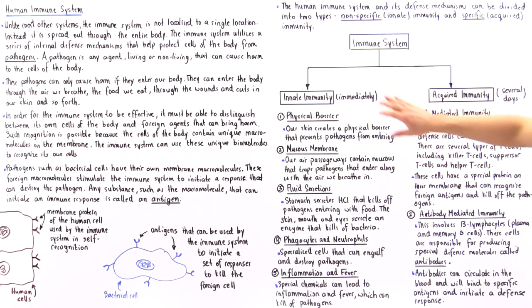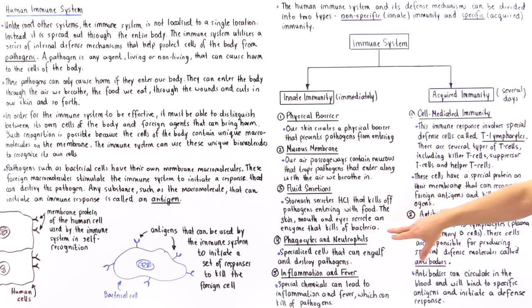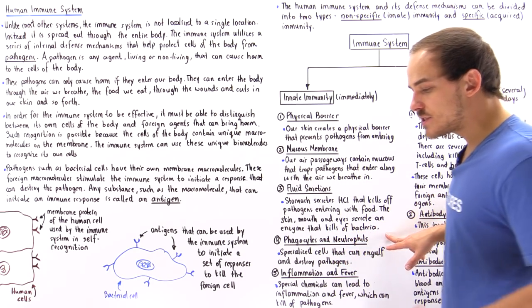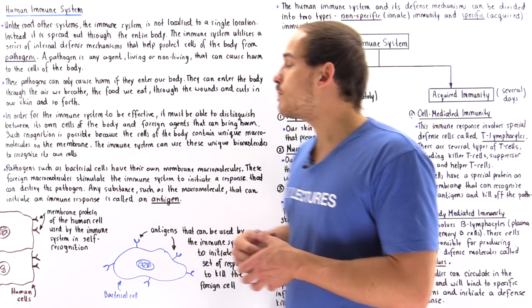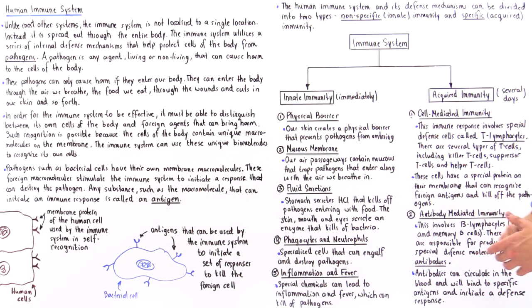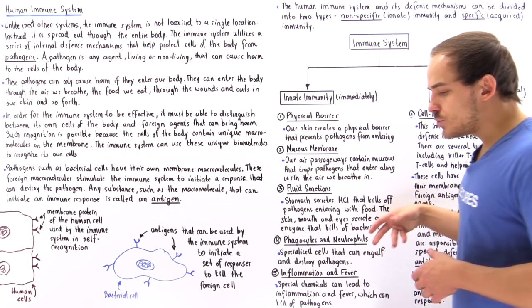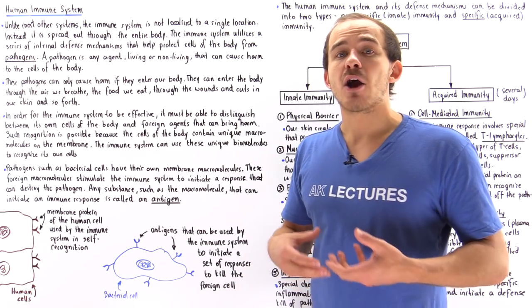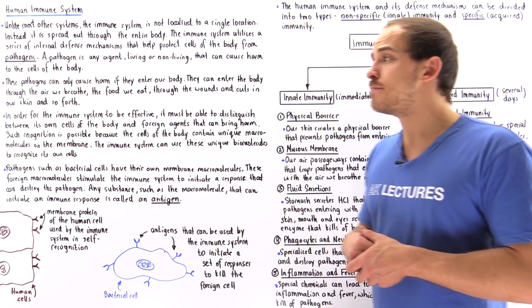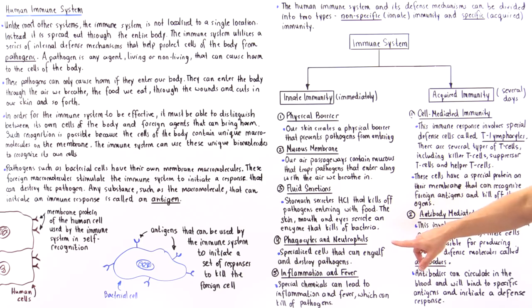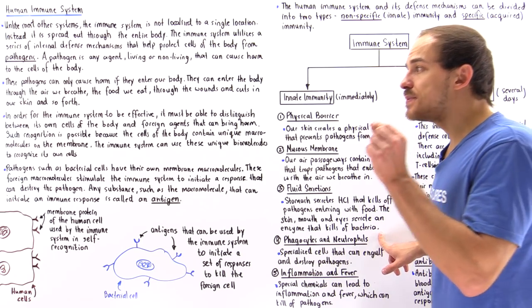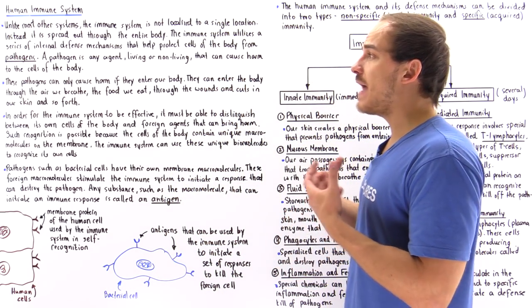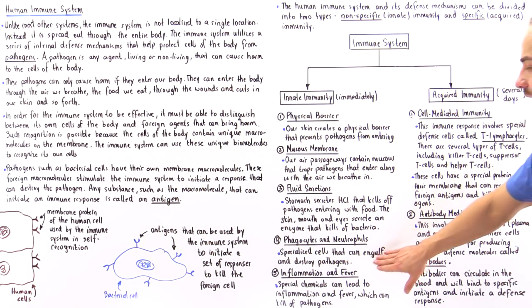The fourth type of innate immunity component involves phagocytes and neutrophils. These are two types of specialized immune cells that are part of the innate immunity response. These cells can essentially engulf a pathogen and destroy it once they engulf it. These cells aren't specific to the type of pathogen they engulf — they engulf anything that is foreign to the body.